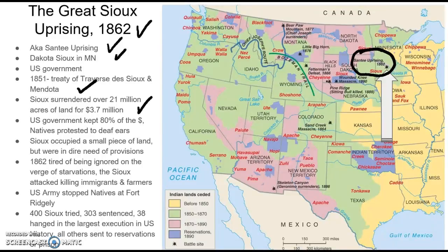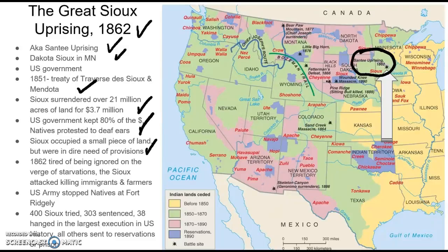Unfortunately, the U.S. government kept 80% of that money. When the Native Americans protested, their protests fell on deaf ears. The Sioux did occupy a small piece of land, but after a few years they were in dire need of provisions. So in 1862, tired of being ignored and on the verge of starvation, the Sioux attacked, killing immigrants and farmers in the area.